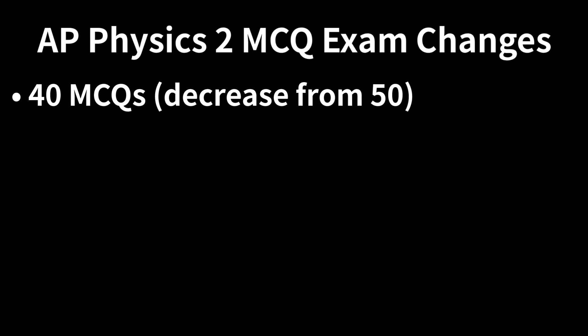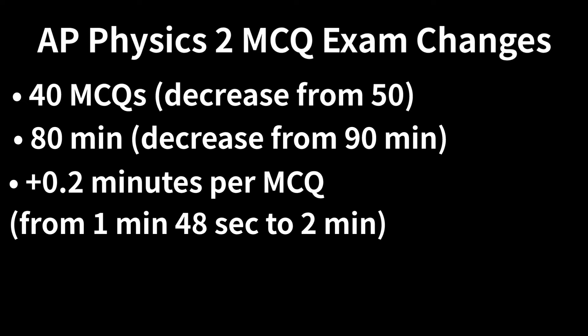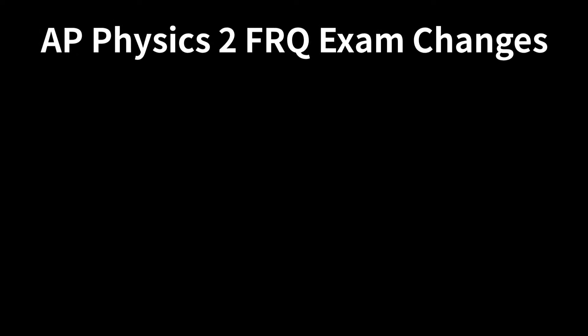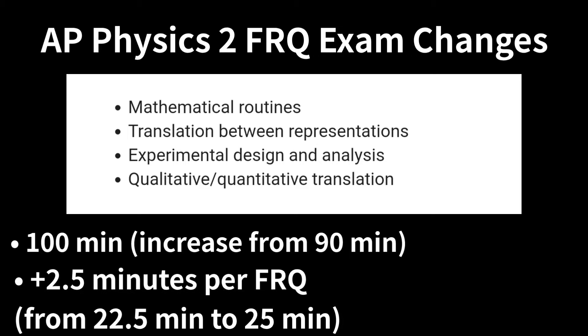What actually matters. There will be a reduction from 50 to 40 MCQs and from 90 minutes to 80 minutes to do them granting 0.2 additional minutes per MCQ question from one minute 48 seconds to two minutes identical to AP physics one. Multi-select are removed as aforementioned. FRQ questions of the types below and a 10 minute increase in time from 90 minutes to 100 minutes granting 2.5 additional minutes per FRQ from 22.5 minutes to 25 minutes assuming identical question weight.